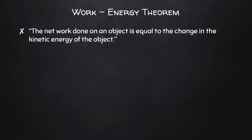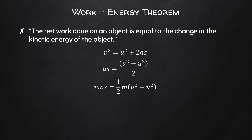Before moving on, we should address the work-energy theorem. This states that the net work done on an object is equal to the change in the kinetic energy of the object. Starting with one of our UAM equations and rearranging it, if we multiply both sides by M, on the left we'll have MA, which is force, and on the right we'll have one-half M times V squared minus U squared. This is essentially FS on the left and one-half MV² minus one-half MU² on the right, which is work equals change in kinetic energy.